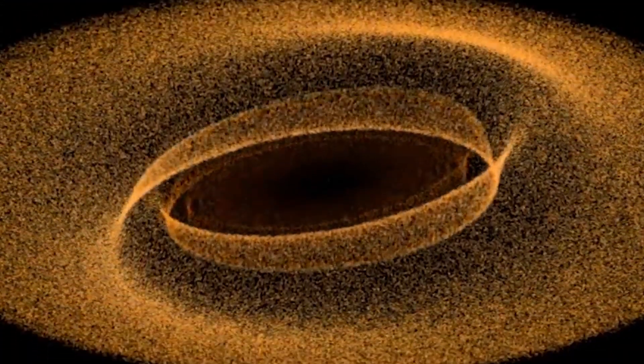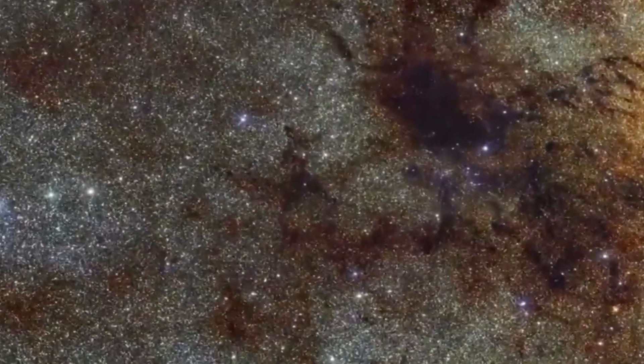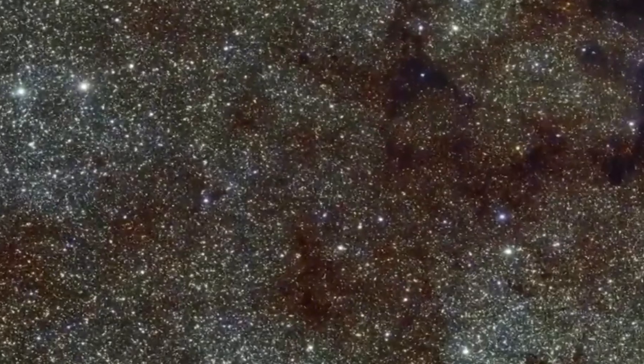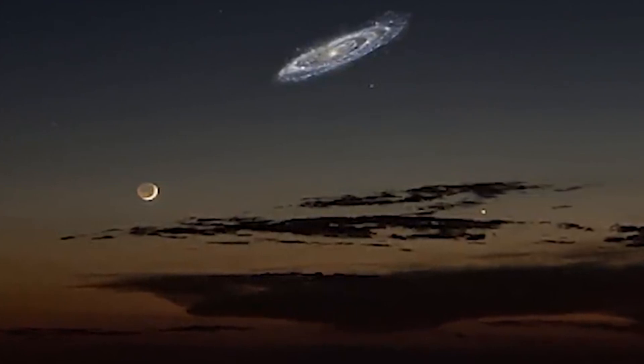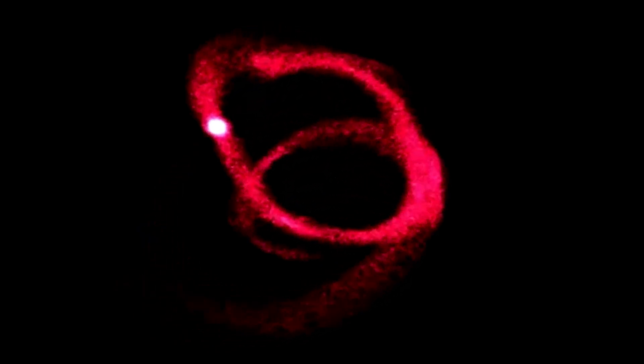But perhaps the strangest thing about our and other galaxies is that they sometimes collide and eat up themselves. To get to its current size, the Milky Way had to consume a couple of other galaxies. Currently, it is having a feast on the Canis Major Dwarf Galaxy.